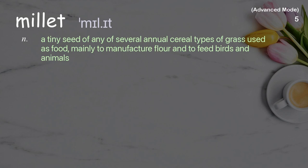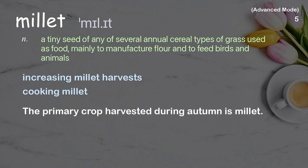Millet: a tiny seed of any of several annual cereal types of grass used as food, mainly to manufacture flour and to feed birds and animals. Examples: increasing millet harvests, cooking millet. The primary crop harvested during autumn is millet.